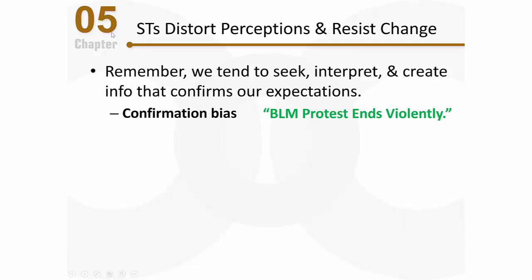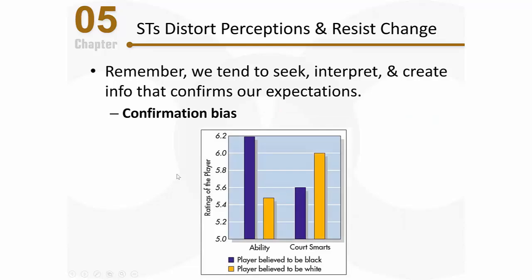Let's look at another example of confirmation bias and how it distorts our perceptions. In one study, research subjects listened to a radio broadcast of a basketball game and were told to pay attention to a particular player. They were led to believe the player was either white or black. When they believed the player was black, they rated him as having more athletic ability but less court intelligence. When they thought the player was white, they rated him as less athletic but more intelligent on the court.